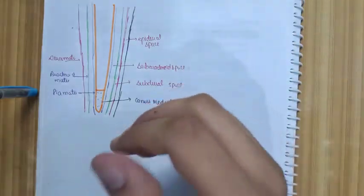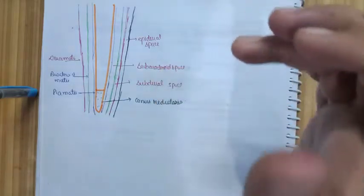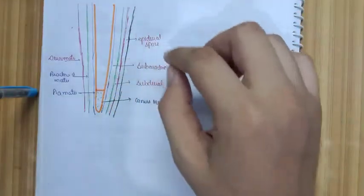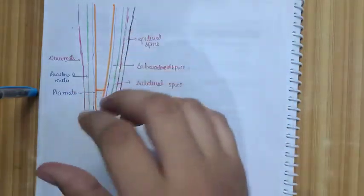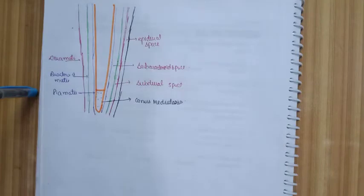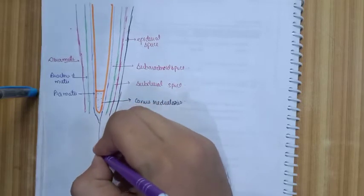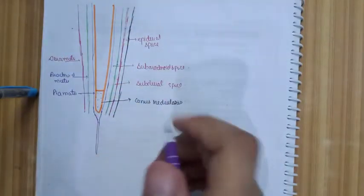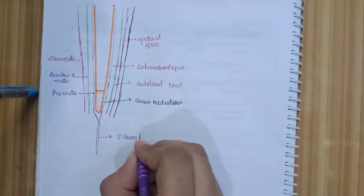We will talk about each layer in detail. But first, let me explain what happens to the pia mater as it comes down. Below the level of L1, the pia mater comes together and forms a long, 20-centimeter extension called the filum terminale.